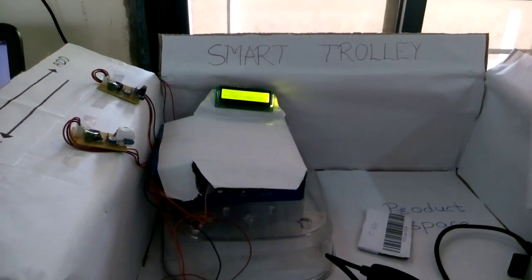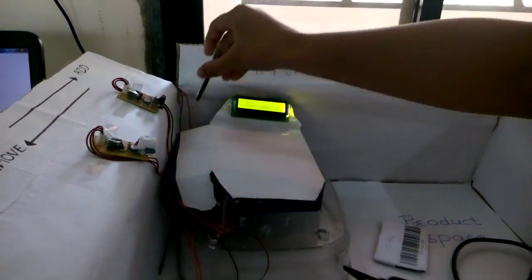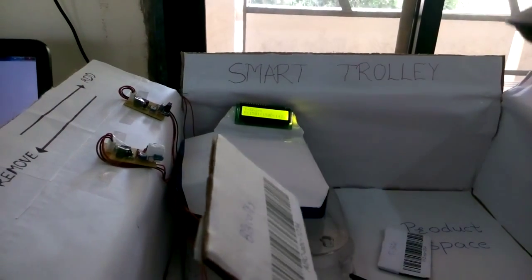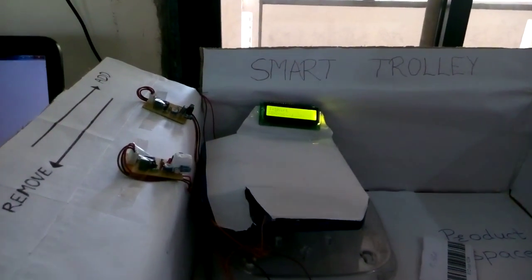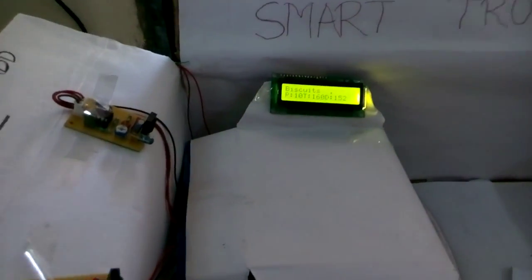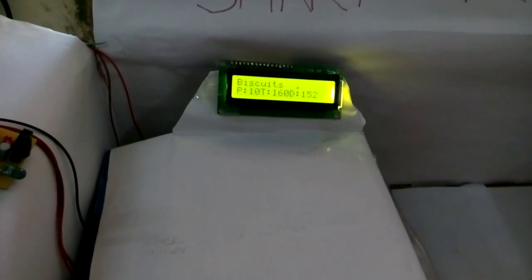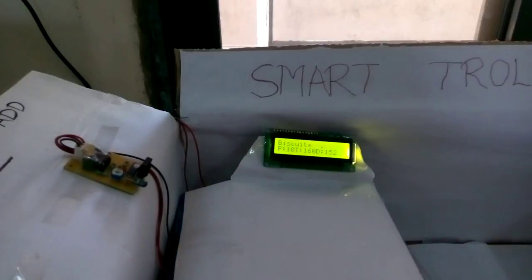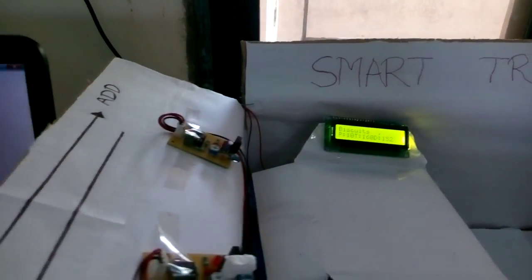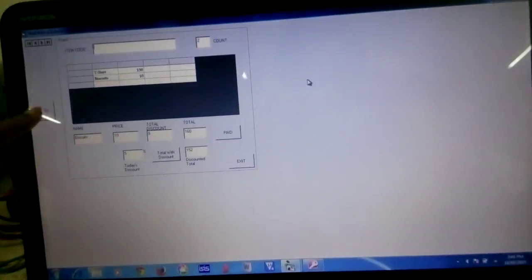Let's add one more product to the trolley. Now we can see the total of the two products is 160 and the discounted price is 152. We can see the products as t-shirt as well as biscuit on the VB window.